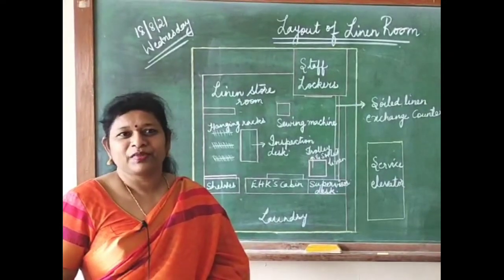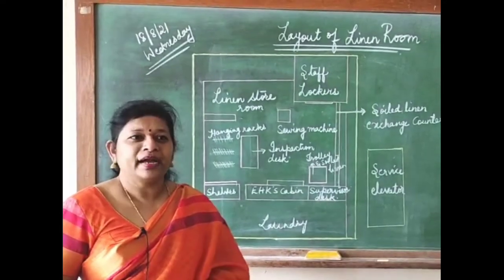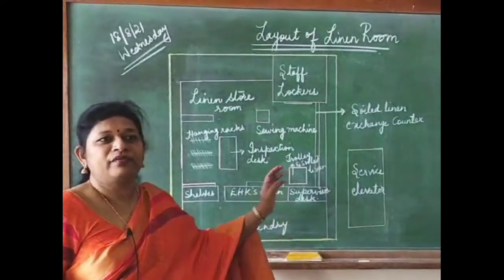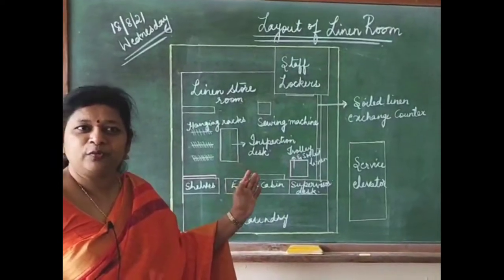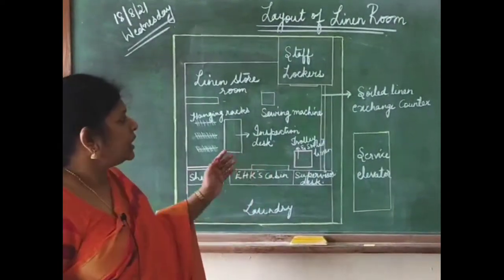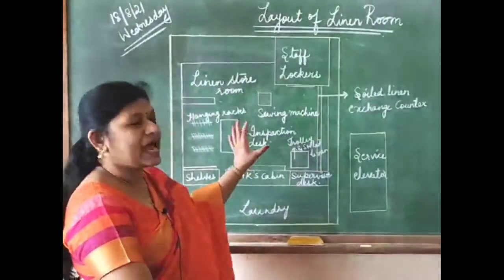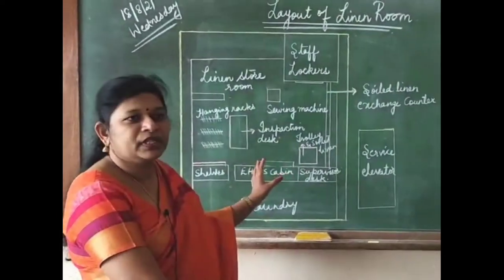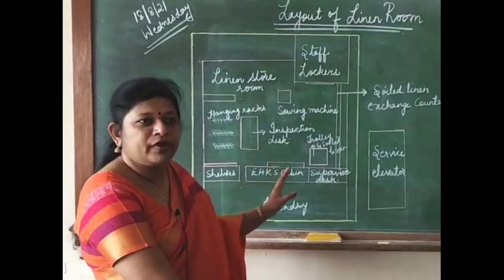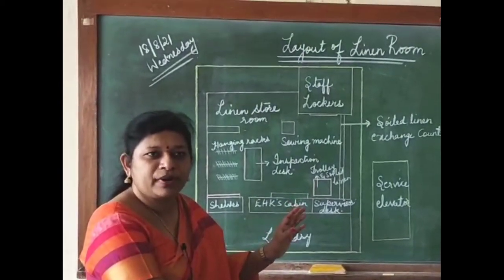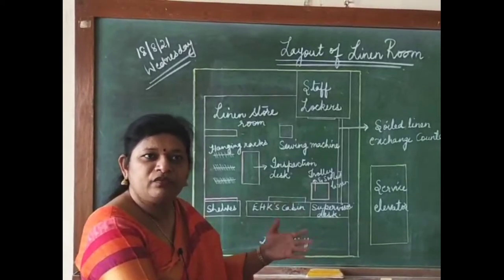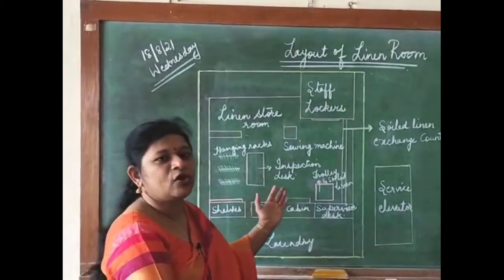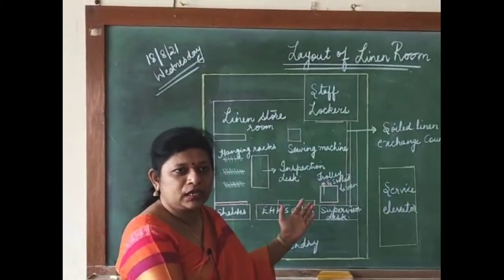Good morning students. Last week we covered the introduction of the third semester, and today we are going to start with the layout of the linen room in a 5-star hotel. This is the actual layout, how it depicts and functions in a star hotel. We are quite familiar with the housekeeping department layout and the pantry layout from the first year, so today we move to the layouts of the linen room and laundry in sequence.